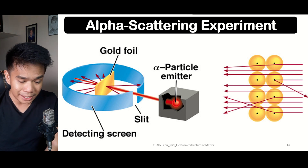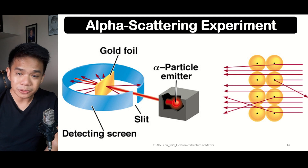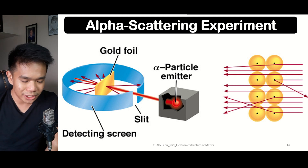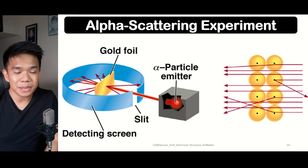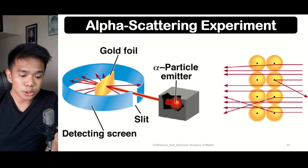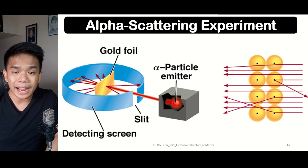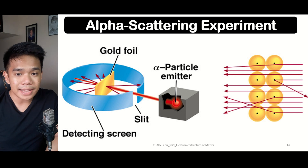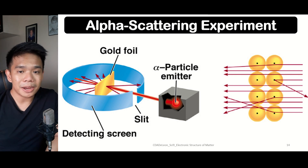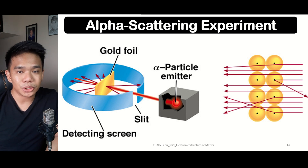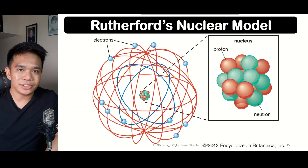In the gold foil experiment, Rutherford's setup consisted of a thin gold foil placed at the center, with an alpha particle emitter beam emitting alpha radiation. These alpha radiations were passed through a slit toward the gold foil. Not all of the alpha rays passed through — some bounced back. This gave him the idea that there is something at the center of the atom, leading him to conclude the presence of the nucleus.